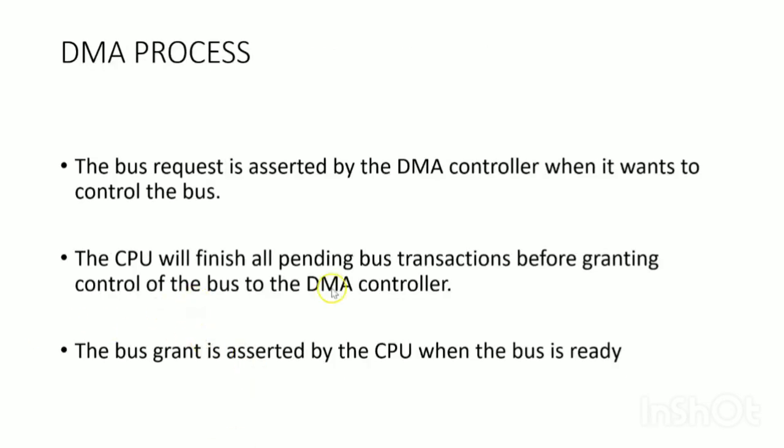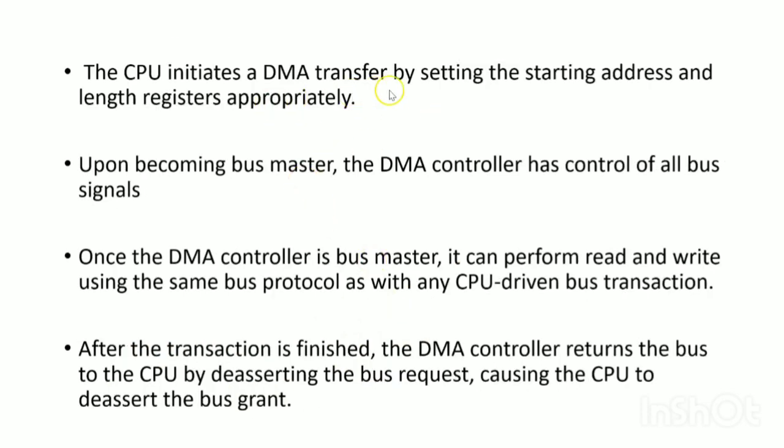Let us discuss the DMA process step by step. First, the Bus Request is asserted by the DMA controller when it wants control of the bus. The CPU will finish its pending bus transactions — since it cannot give the Bus Grant while currently using the bus — and then it asserts the Bus Grant signal when the bus is free. The CPU initiates the DMA transfer by setting the starting address and length registers appropriately.